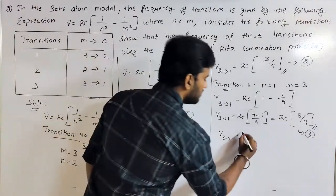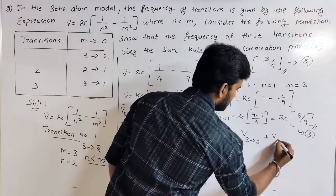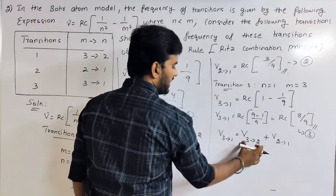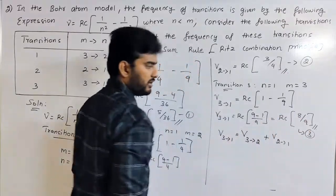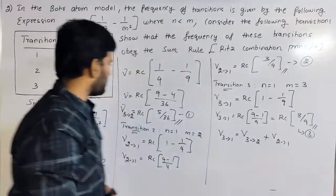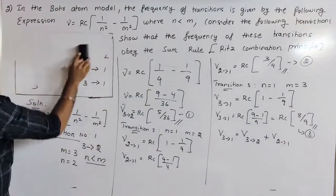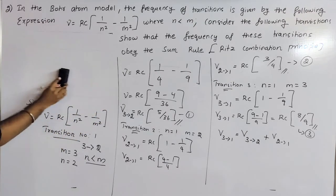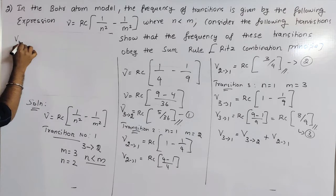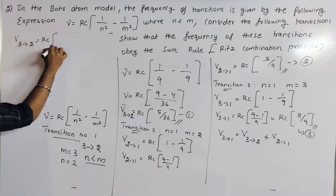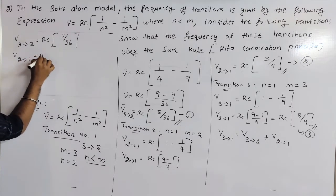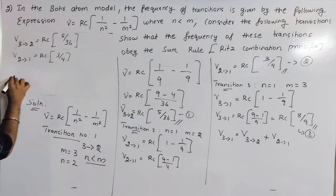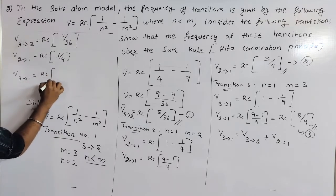Now let's write frequency 3 to 2 plus frequency 2 to 1 and verify the sum rule. Frequency 3 to 2 equals RC times 5/36. Frequency 2 to 1 equals RC times 3/4. Adding these: RC(5/36 + 27/36) equals RC times 32/36, which equals RC times 8/9. This equals frequency 3 to 1, confirming the Ritz Combination Principle sum rule.